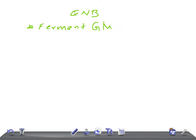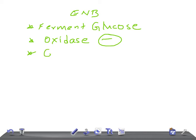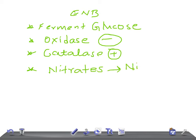Enterobacteriaceae are oxidase negative. Can you tell me one bacteria that is oxidase positive? That's Pseudomonas. As for the catalase test, it is positive here. Another important feature is that they reduce nitrates to nitrites. So to summarize: they ferment glucose, are oxidase negative, catalase positive, and convert nitrates to nitrites — and they are gram-negative rods.